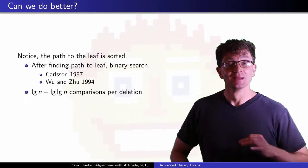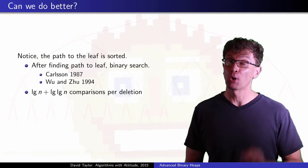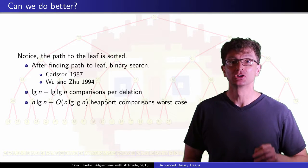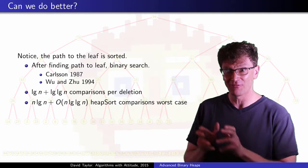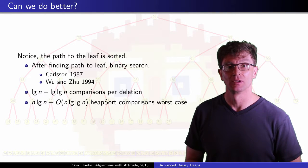This gives us log n plus log log n comparisons per deletion, or n log n plus order n log log n total comparisons, where that first term, the n log n term, has no constant hiding in front of it.